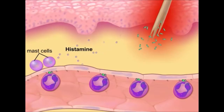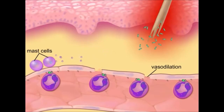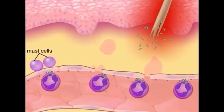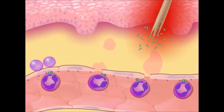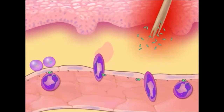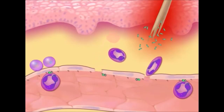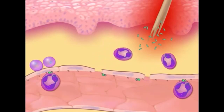Histamine causes vasodilation and an opening of the junctions between the endothelial cells, allowing fluid and leukocytes to leave the capillary and enter the infected tissue. The neutrophils now undergo dramatic changes in shape and squeeze through the endothelial wall into the interstitial tissue fluid. This process is called extravasation.